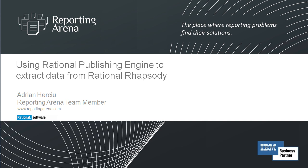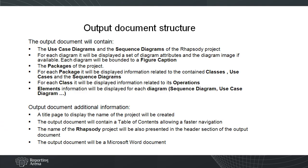In this tutorial we are looking to extract all the use case diagrams and the sequence diagrams of the Rhapsody project. A set of diagram attributes and the diagram image will be displayed for each diagram. Each diagram will be bounded to a figure caption. The set of packages and classes will be extracted in a recursive way, since any package can contain other packages and any class can contain other classes. For each package it will display information related to the contained classes, use cases and sequence diagrams. For each class it will display information related to its operations.